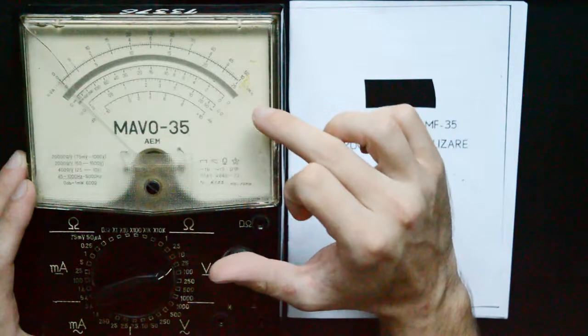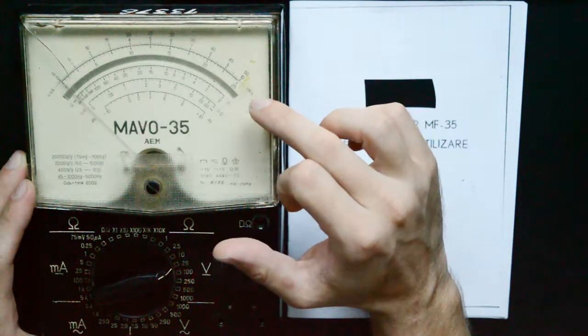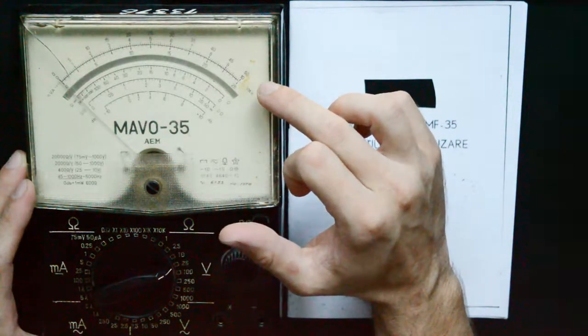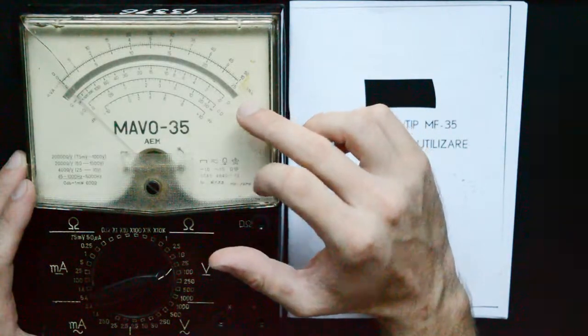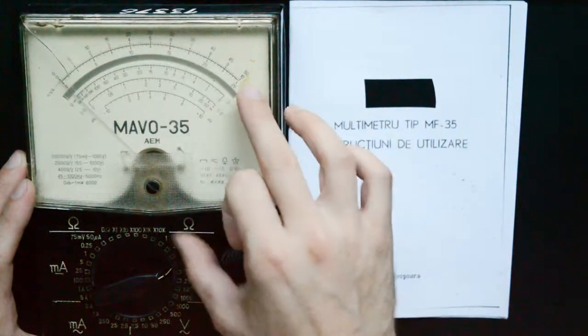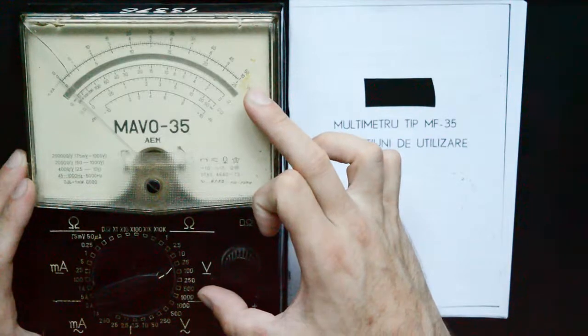Now, you will see that for the volts and amps there are three different scales: one going up to 10, one going to 50, and one going to 25. Each of these scales are used for the various ranges that are available on the instrument.